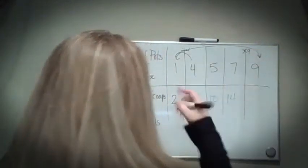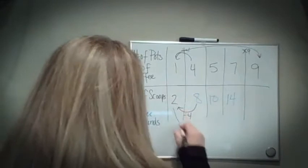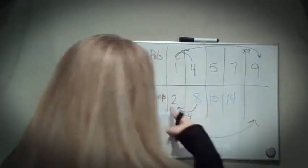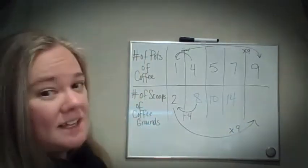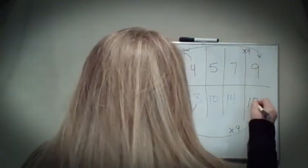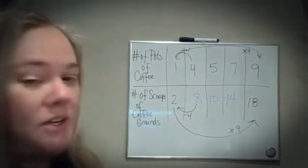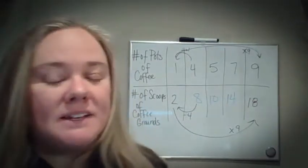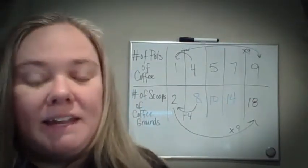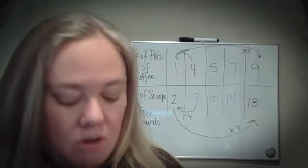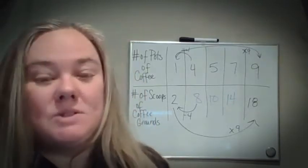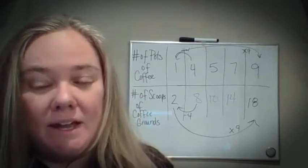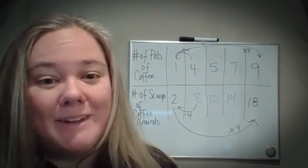One times nine is nine. I have to do the same thing on the other side — multiply two times nine, which is 18. So when you find that unit rate, finding any ratios on your ratio table is going to be super easy, super quick, and hopefully that was super helpful.